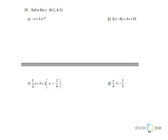In number 58, we need to solve the inequalities. So for the first one, I need to get x alone. Just subtract 4 from both sides. Negative x is less than or equal to 3.